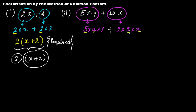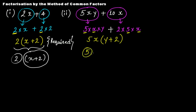The first term has three factors: 5, x, and y. The second term has three factors: 2, 5, and x. The common factors in both terms are 5 and x. So we take 5x outside, giving 5x(y + 2). The three factors of this algebraic expression are 5, x, and (y + 2), and 5 × x × (y + 2) is the required factorization.